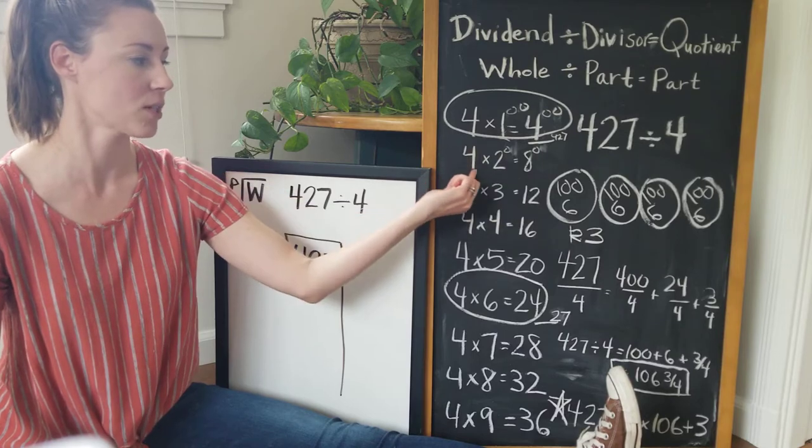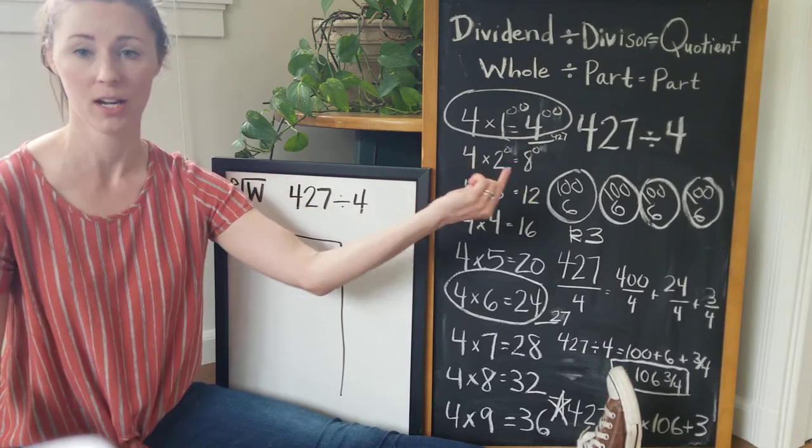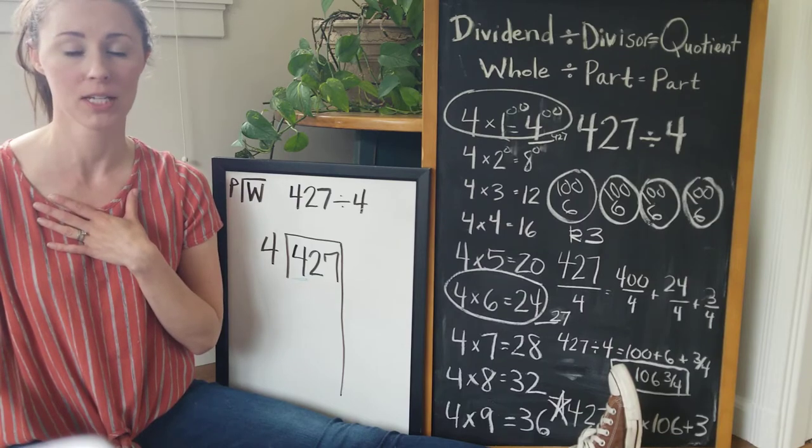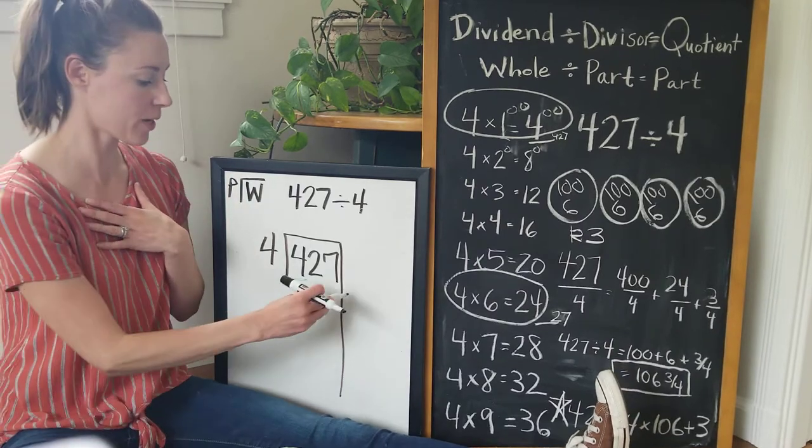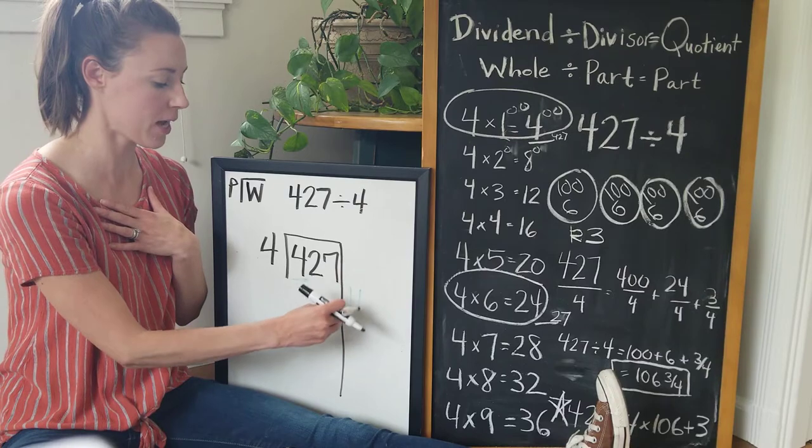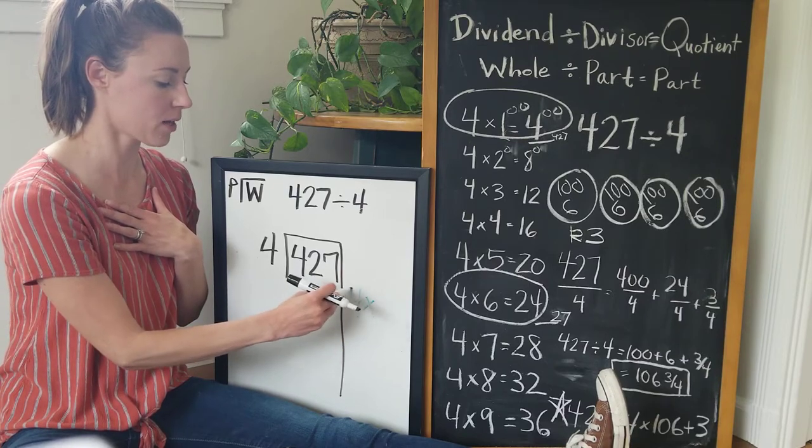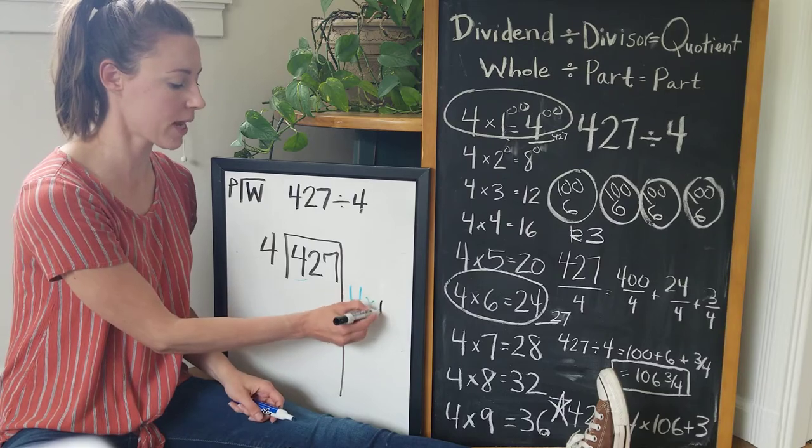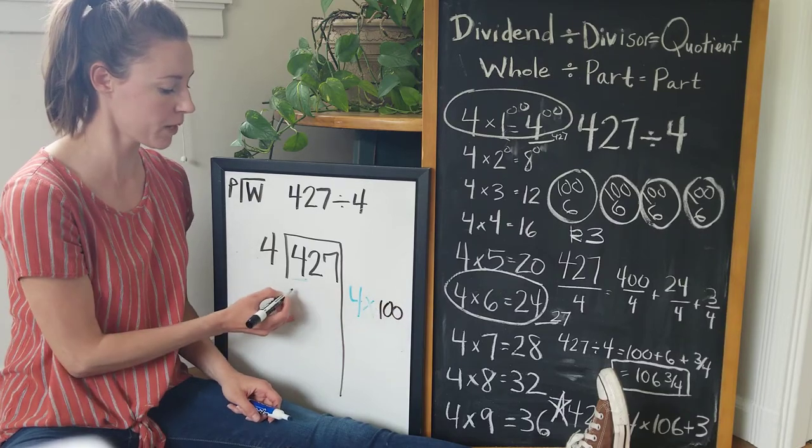Four times two is eight, so four times 200 would be 800. I don't have enough to give each child 200, but I do have enough to give each child 100, right? So I have four groups of 100, and I'm going to write that on the side. Four groups of 100, four times 100 would be 400.